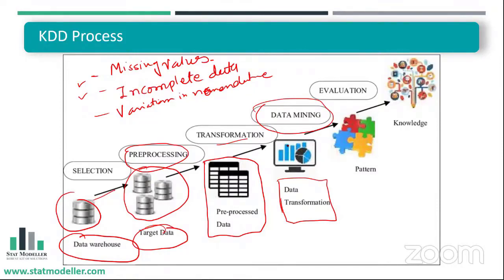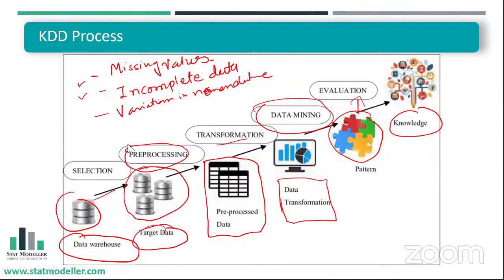At the data mining stage, you identify patterns from the transformed data that are relevant to your purpose and extract relevant measures. These patterns must then be evaluated — because a pattern might appear by chance — and must hold true for future or testing data as well to give optimum results. Once evaluation is done, it brings knowledge about the problem, which is the goal of the entire KDD process.